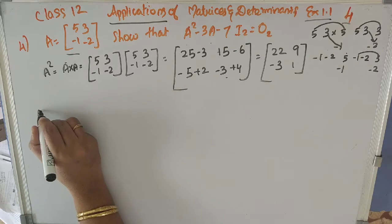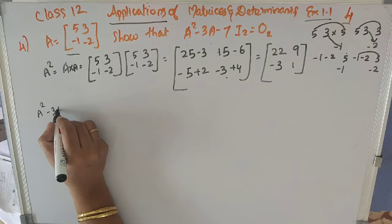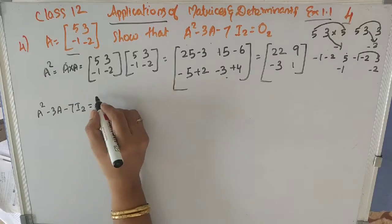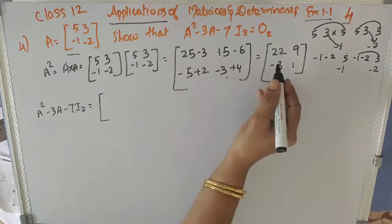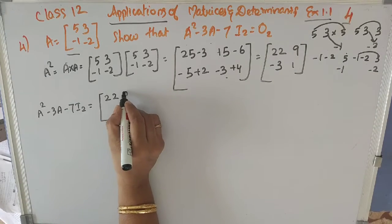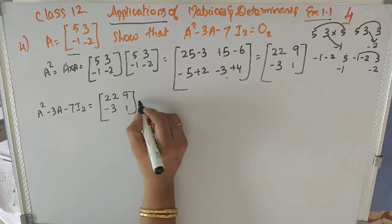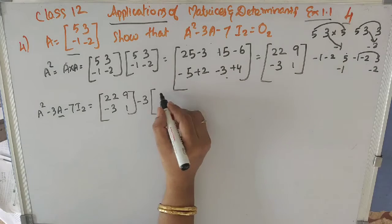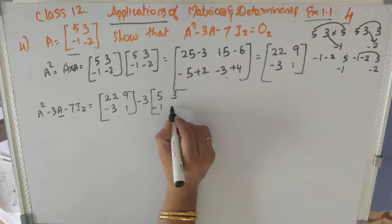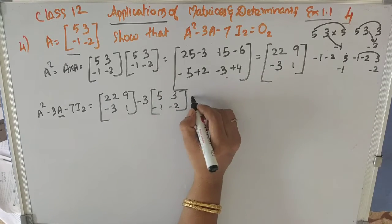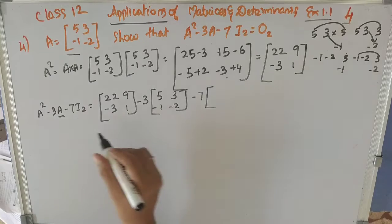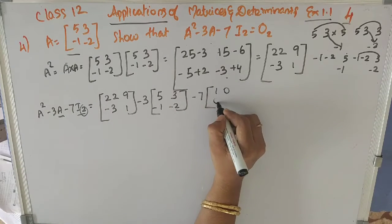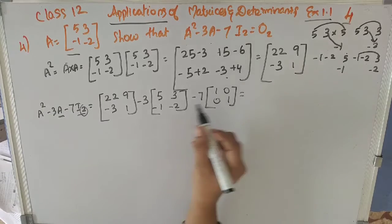So 25 minus 3 is 22, 15 minus 6 is 9, minus 5 plus 2 is minus 3, minus 3 plus 4 is 1. We have found A squared as the matrix: 22, 9, minus 3, 1. Now we have to find A² minus 3A minus 7I₂. Minus 7 times I₂, which is the 2×2 identity matrix with diagonals equal to 1: that is 1, 0, 0, 1.